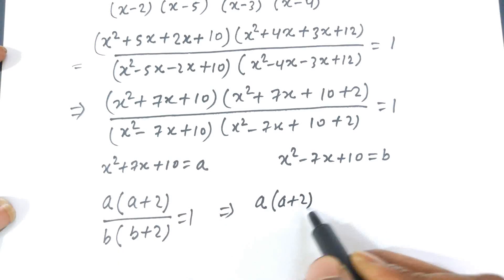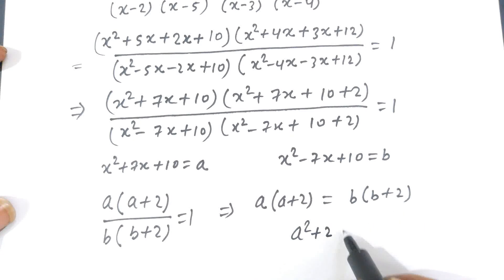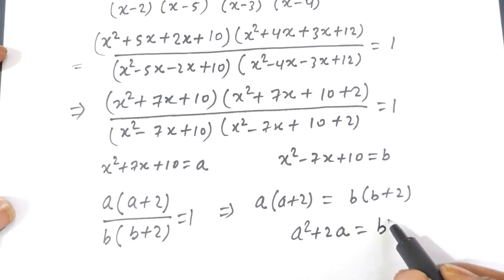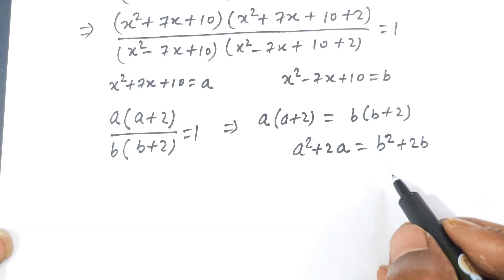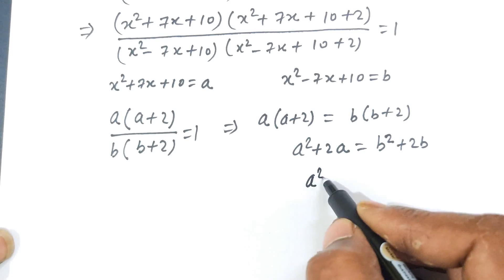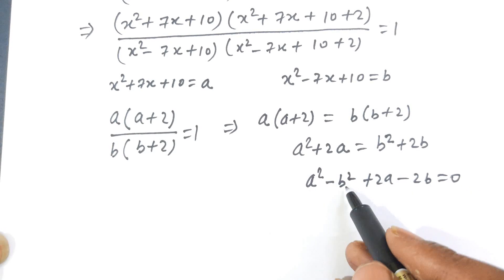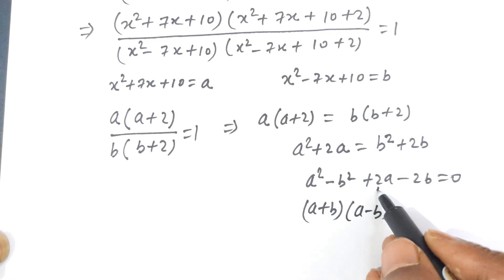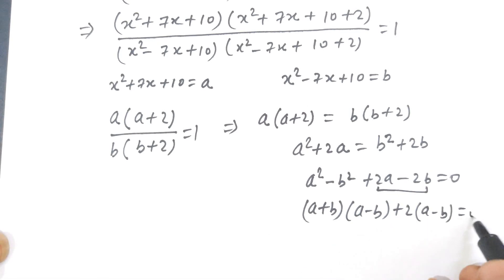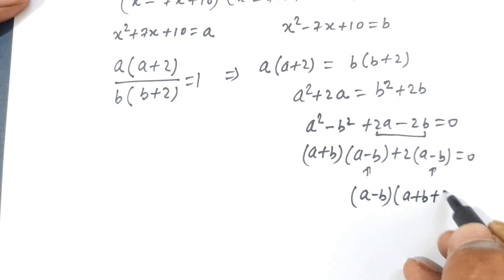Cross-multiplying gives a(a+2) = b(b+2), which expands to a² + 2a = b² + 2b. Rearranging: a² - b² + 2a - 2b = 0. Using the identity a² - b² = (a+b)(a-b), and factoring 2 from the remaining terms gives (a-b)(a+b+2) = 0.